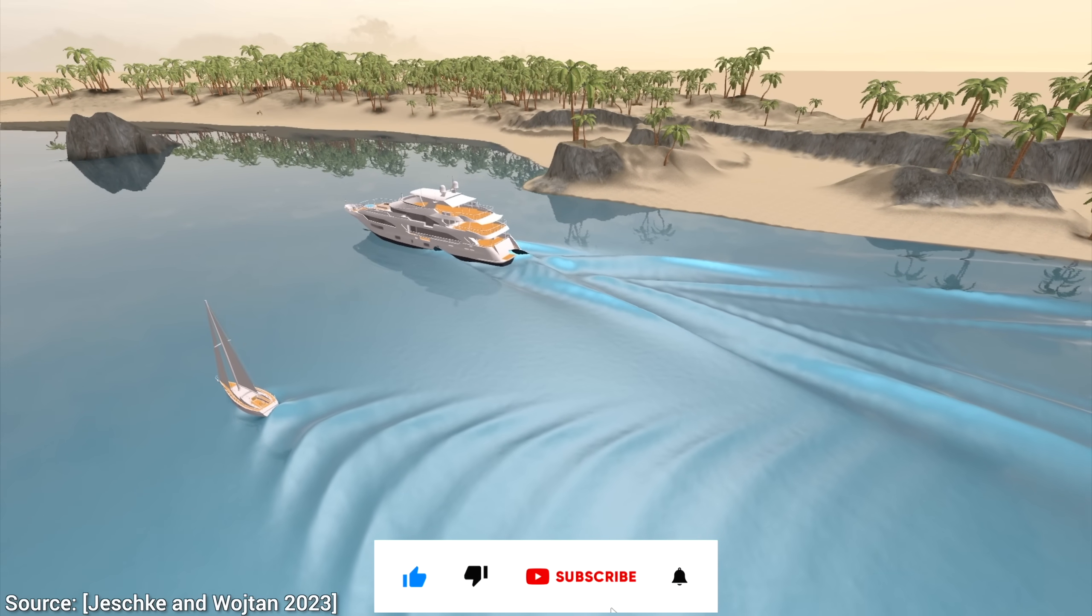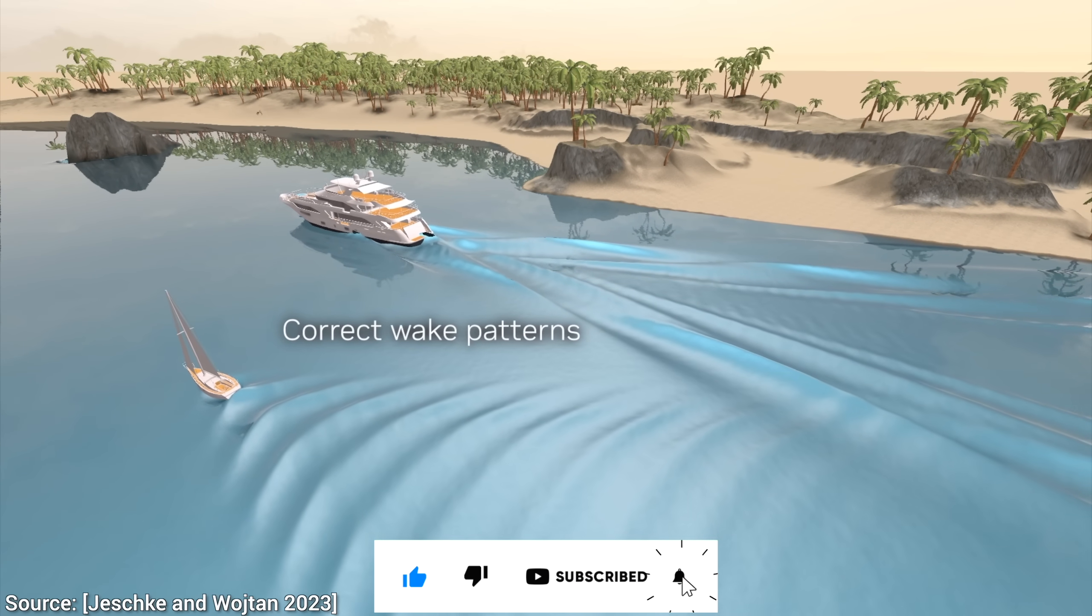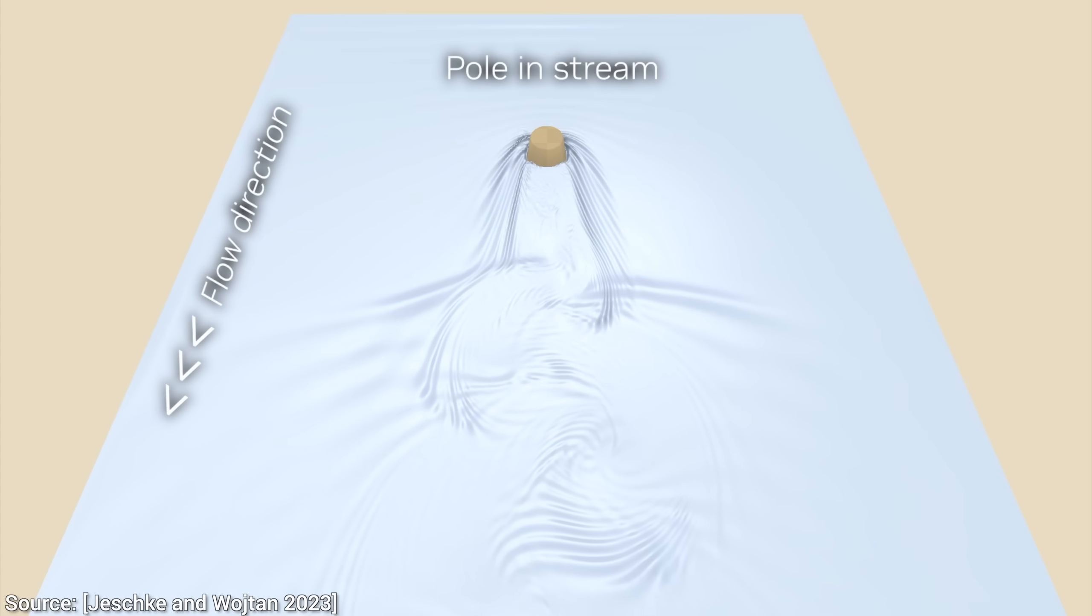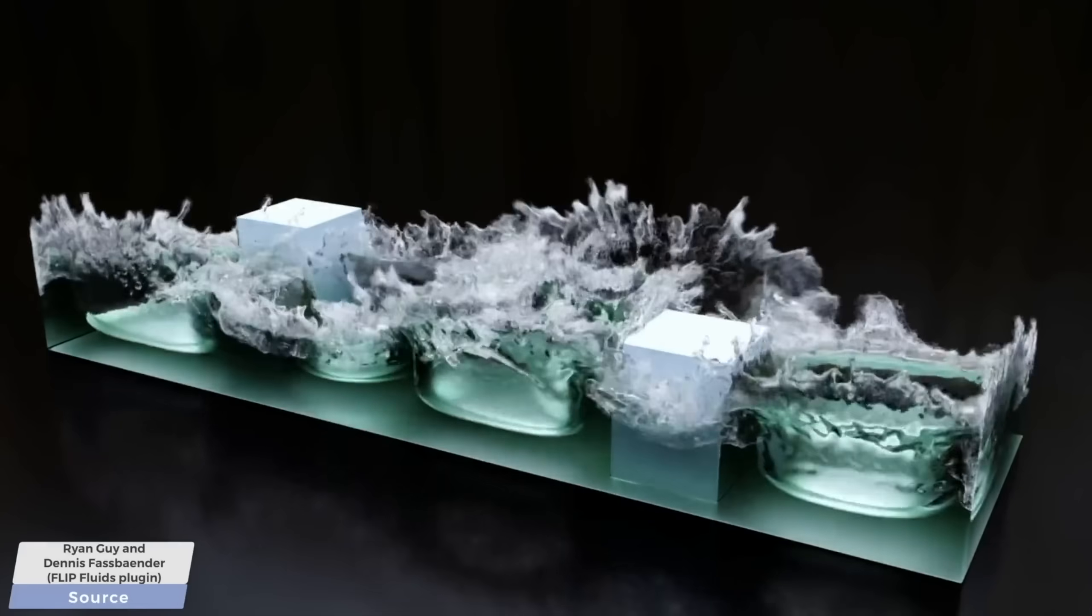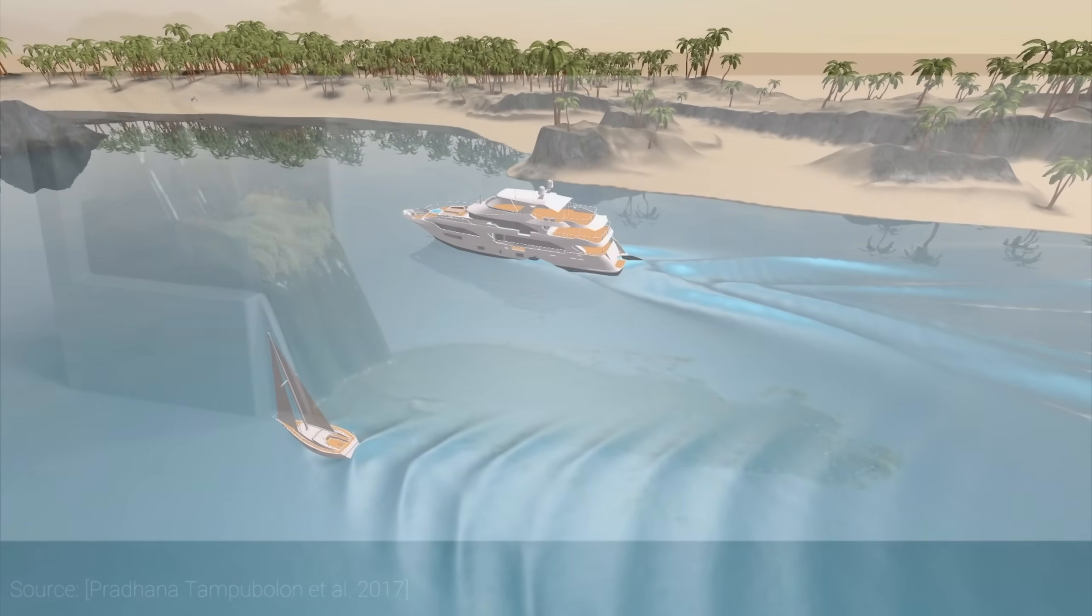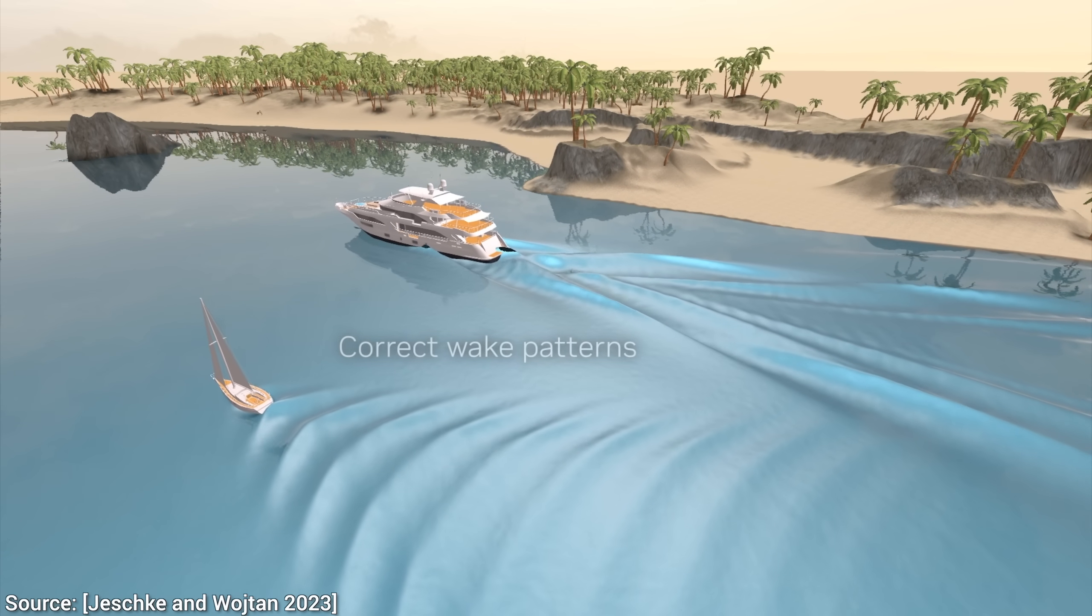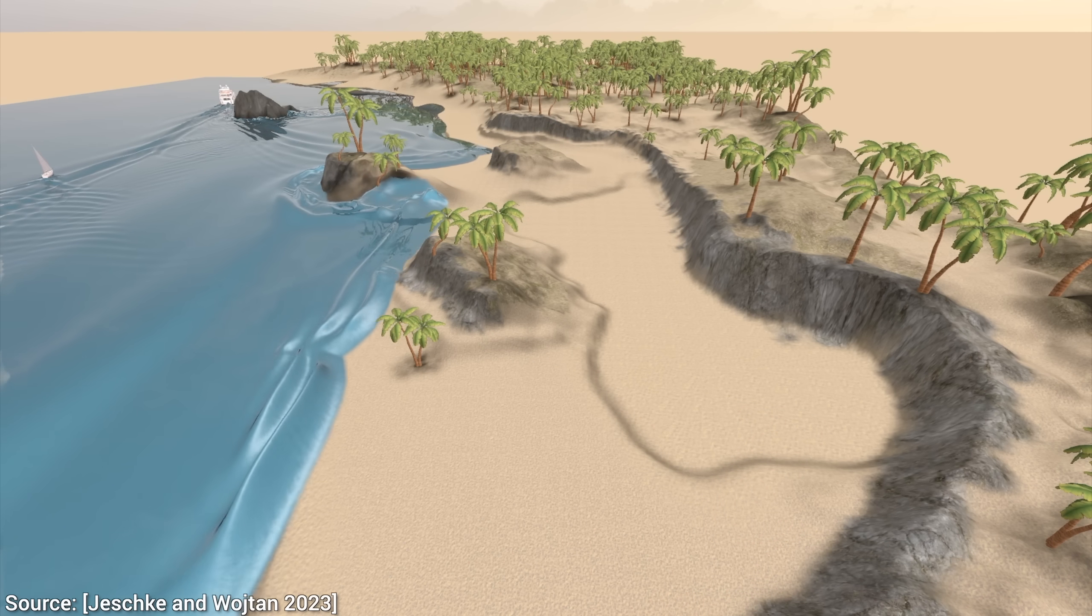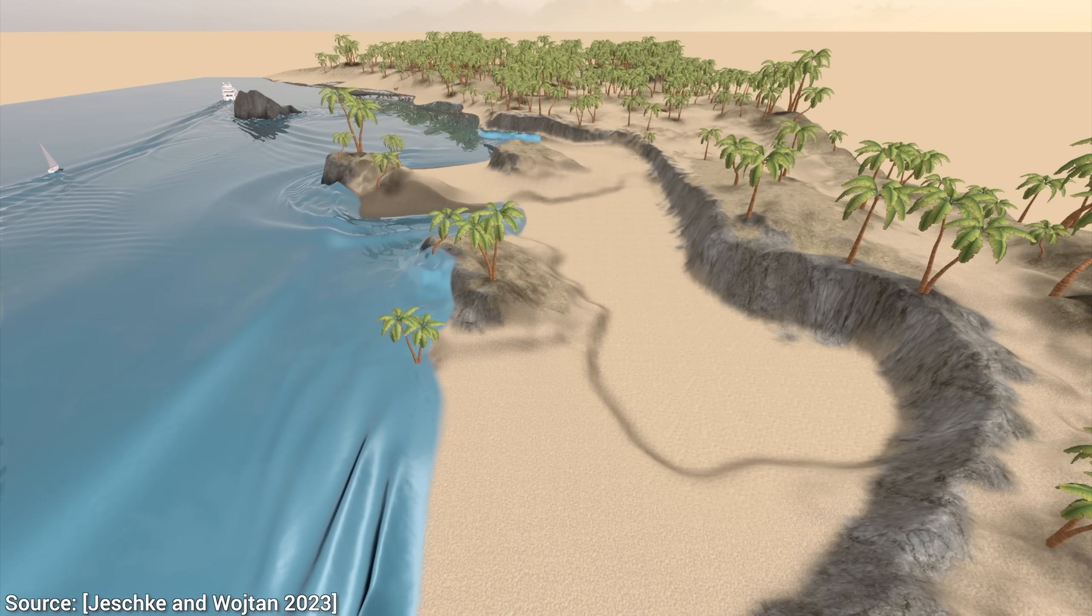This amazing paper is a collaboration between NVIDIA and IST Austria on how to simulate water. But not just any piece of water like many previous techniques. No, no, these are large-scale simulations with boats, dispersive reflections, waves sloshing onto the beach, and oh my, a tiny bit of flooding as well.